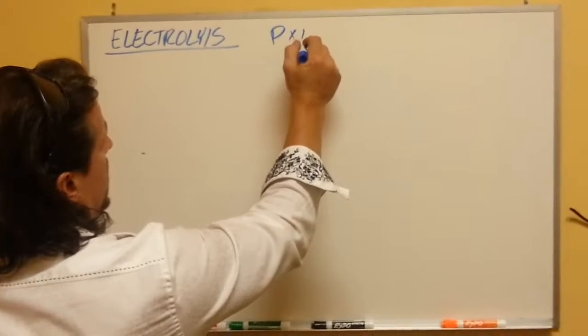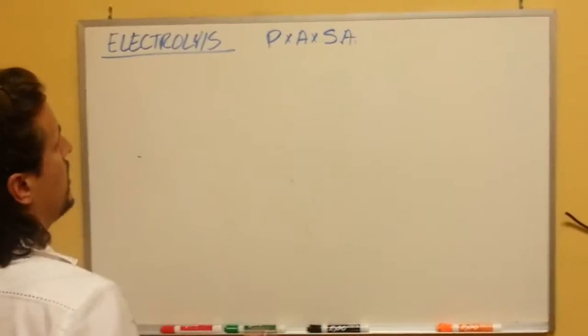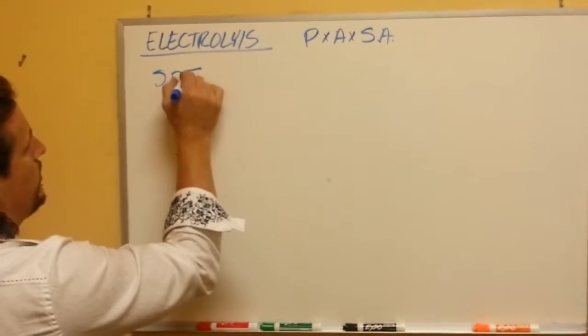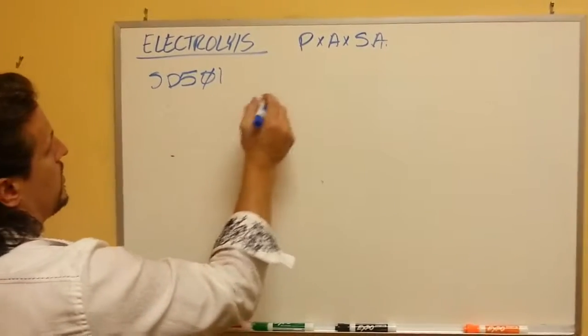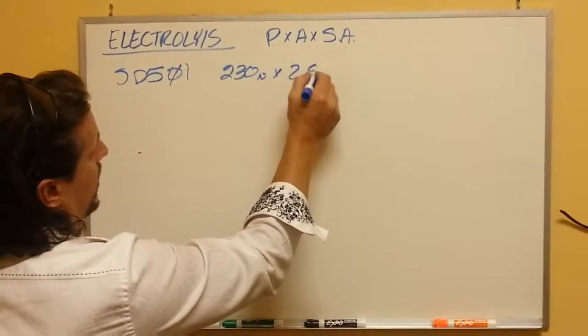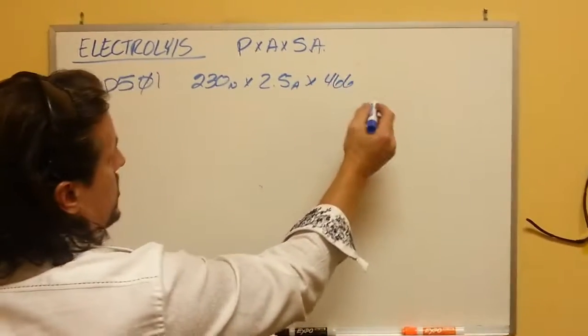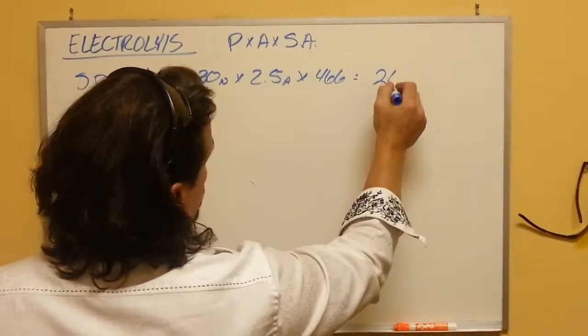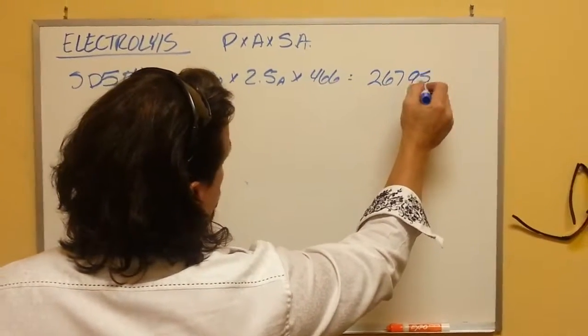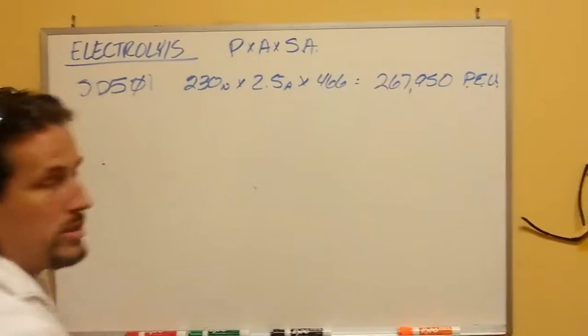It's a question of power times the amperage times the surface area of the plates. So, for instance, the SD501, which is what we used for Schuyler, has 230 watts, 2.5 amps, and 466 square inches of plate space, which gives you a number of 267,950 potential electrolysis units.